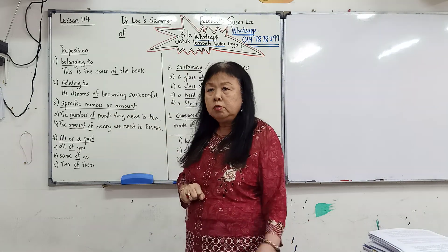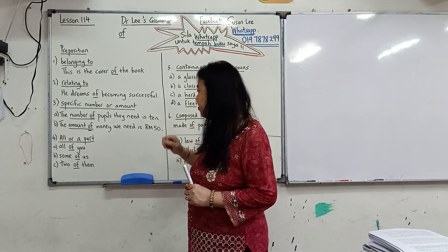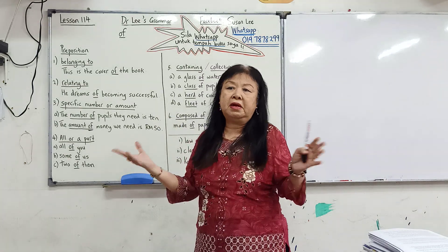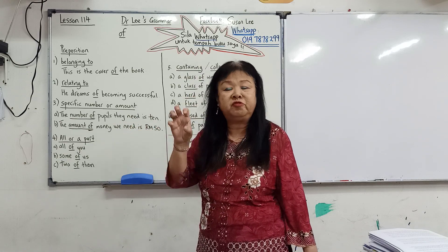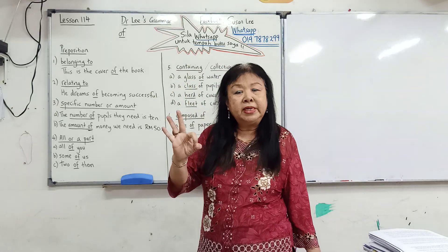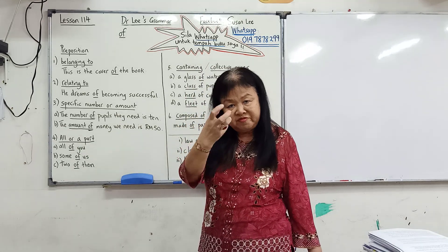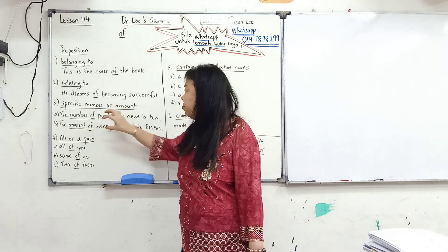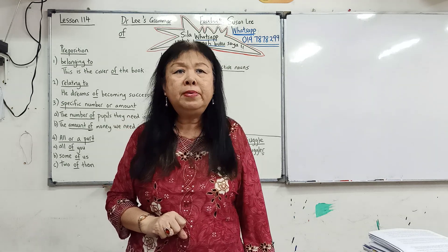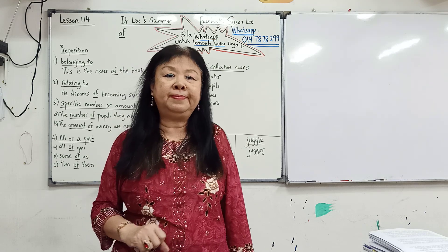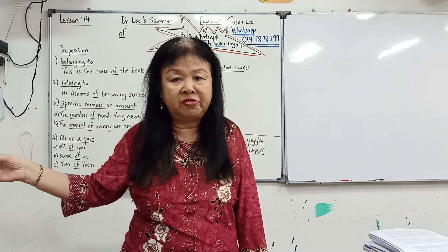Number three, we use 'of' to show a specific number or amount — specific meaning fixed, like 10 persons or 50 ringgit — or just to mean many. For example, 'the number of pupils.' You don't say 'number pupils' but 'the number of pupils.' The 'of' here means the fixed, specific number. Similarly, 'the amount of money' — the fixed amount we want. You can also say 'the number of females in the university is increasing' without stating how many, but still using 'the number of' or 'the amount of'.